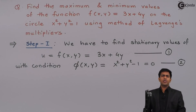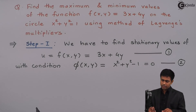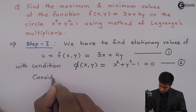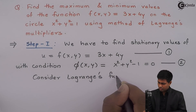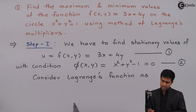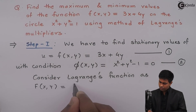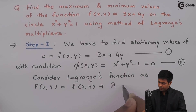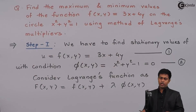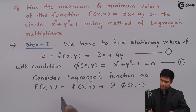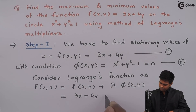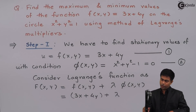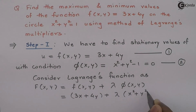After equation number two, we consider the Lagrange's function to find out the stationary values. The Lagrange's function is F(x,y) = f(x,y) + λ·φ(x,y). So the value is 3x + 4y + λ(x² + y² - 1).